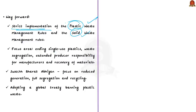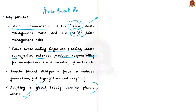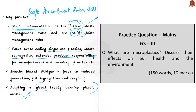The way forward is tight implementation of the Plastic Waste Management Rules and Solid Waste Management Rules, with focus on ending single-use plastics, waste segregation, extended producer responsibility, and ensuring recovery of materials. The Swachh Bharat Abhiyan should focus more on reduced generation of plastic, full segregation, and recycling of plastic waste. At the global level, countries should come together for a new global treaty banning plastic waste. The government has also introduced the Draft Plastic Waste Management Amendment Rules of 2021 to expand the scope of the 2016 rules, and we hope these will be made more stringent.